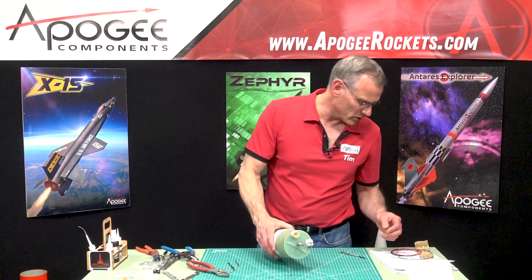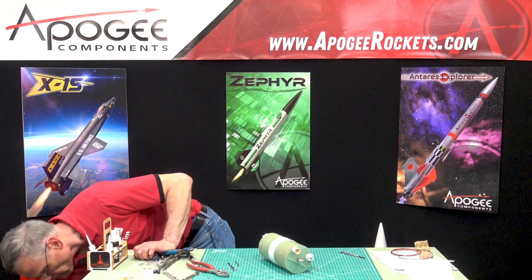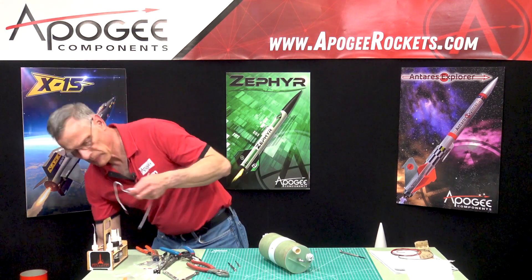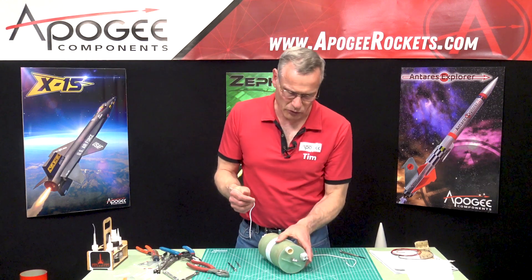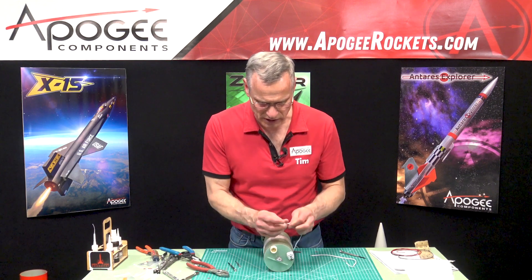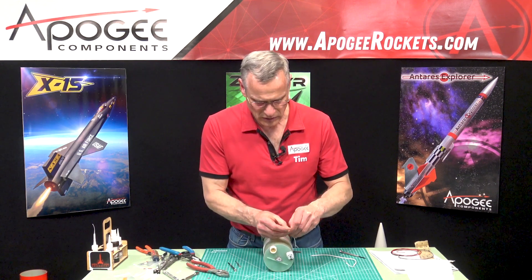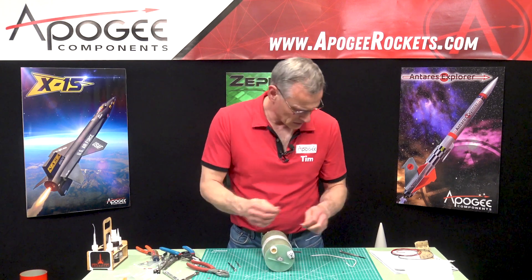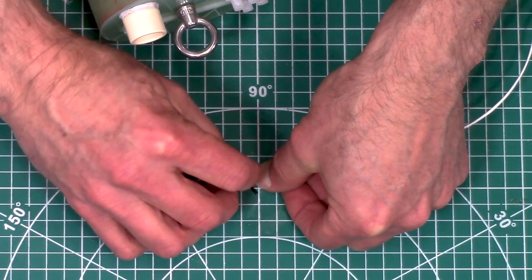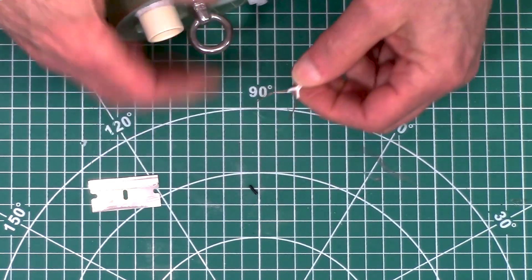All right. So now our igniters. I think I used to have some igniters here. When it comes ready to hook up your igniters, you'll go to your terminal blocks on the other side. I'm going to split the wire here. Get started.